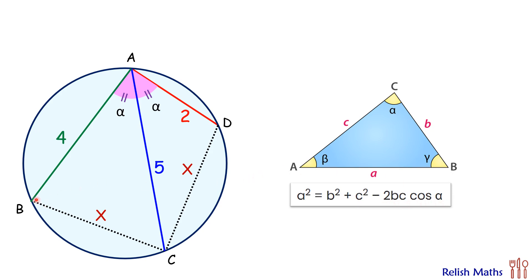So here we'll apply law of cosine first in triangle BAC. In this triangle we have to find x, so x² = 4² + 5² - 2(4)(5)cos α. The same law of cosine we'll apply in triangle CAD, so x² = 5² + 2² - 2(5)(2)cos α.